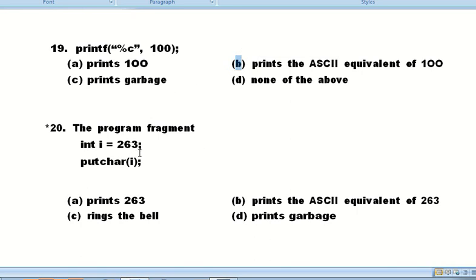Question number twenty: From the program fragment int i = 263, putchar(i) - 263 is used to ring the bell. Option C: rings the bell is correct.